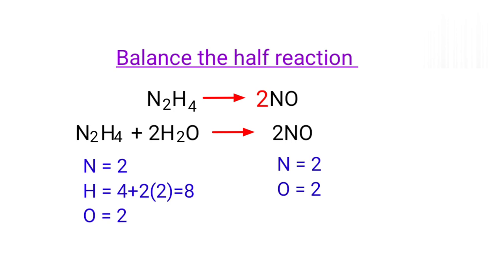The oxygen atoms are balanced. Now you can balance the hydrogen atoms. To do this, you can produce H plus ions. Now the number of atoms are balanced on both sides.